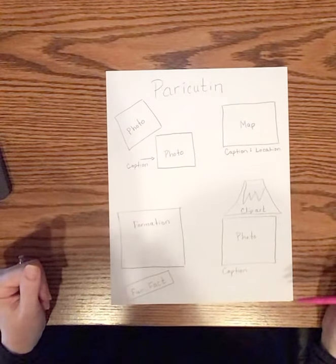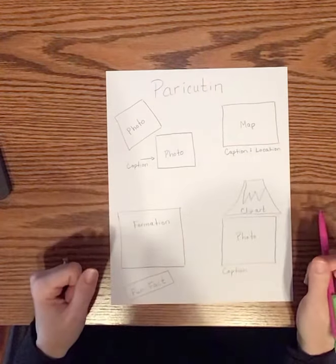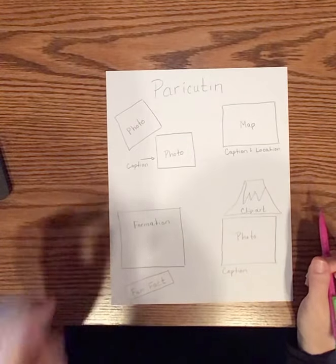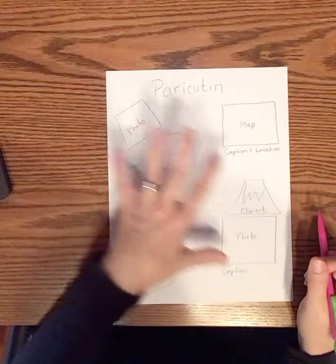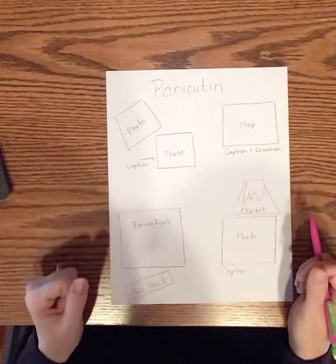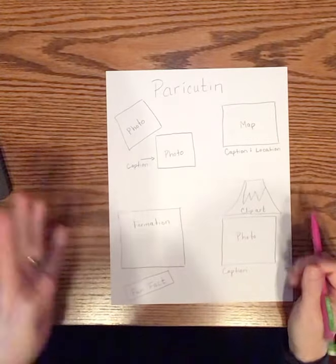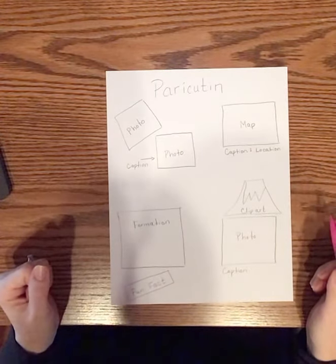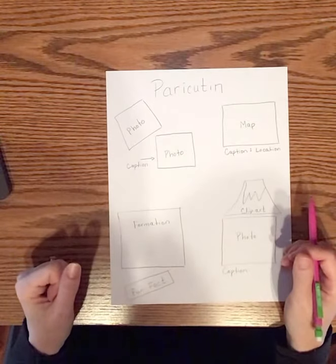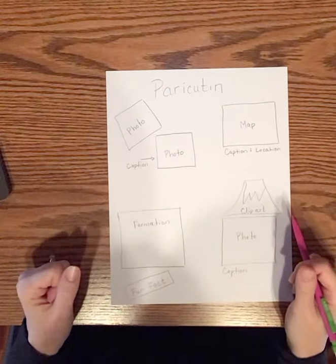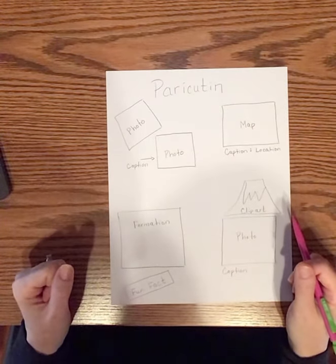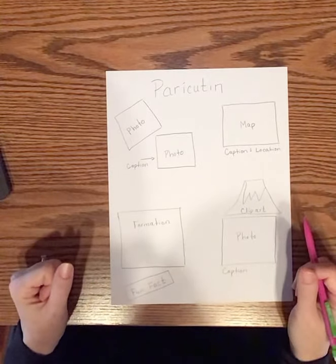So you're going to do this for each of your four volcano types. You may choose to put maybe more than one on a page, or you may choose to do four separate pages. It's entirely up to you, but this will help you get started. That way when you move on to the next step, you're ready to jump right in and start putting it into the pages app. Good luck.